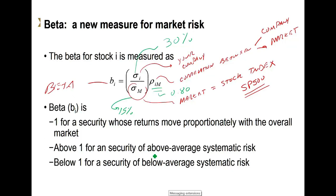So above 1 means you have above-average systematic risk. A beta below 1 is below-average systematic risk. Beta is a measure of systematic risk, and it gives you a number: if higher than 1, you are investing in a company with higher risk than the market; if lower than 1, you're investing in a company with lower risk than the market. If a company has higher risk than the market, then you will be expecting a higher return. We're going to transform that beta into a return expectation very soon.